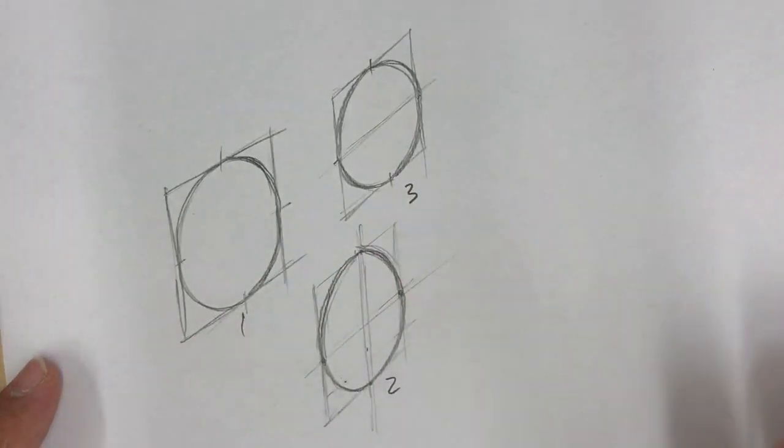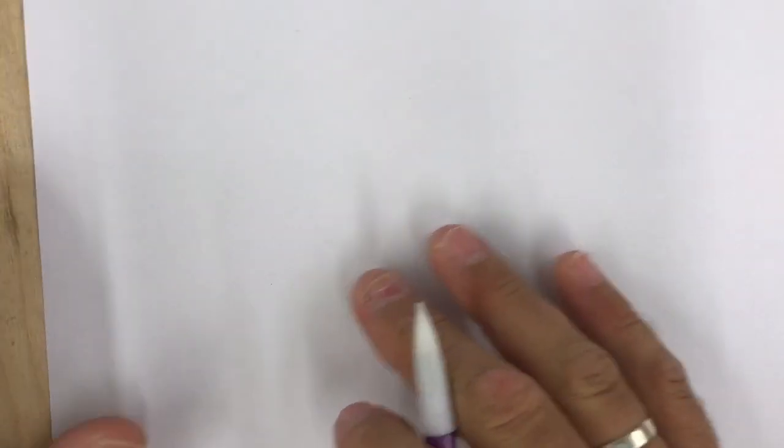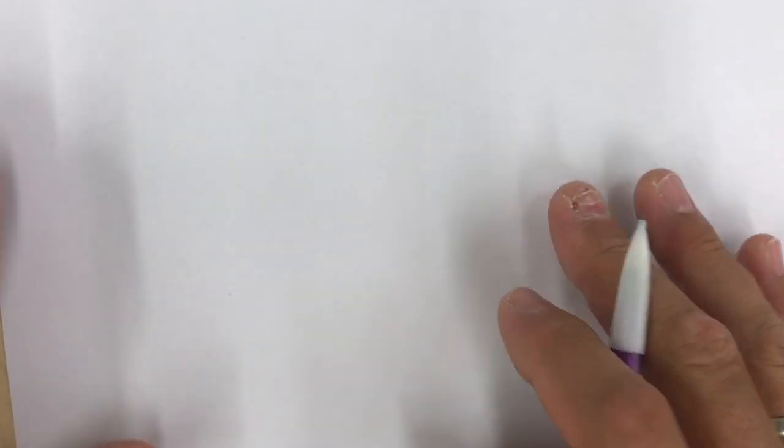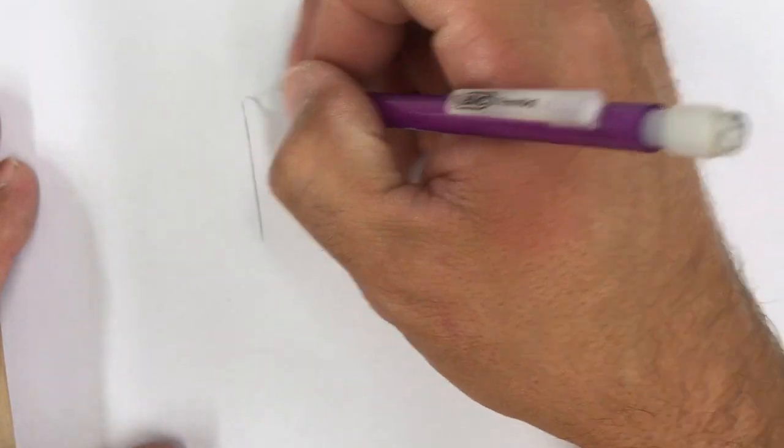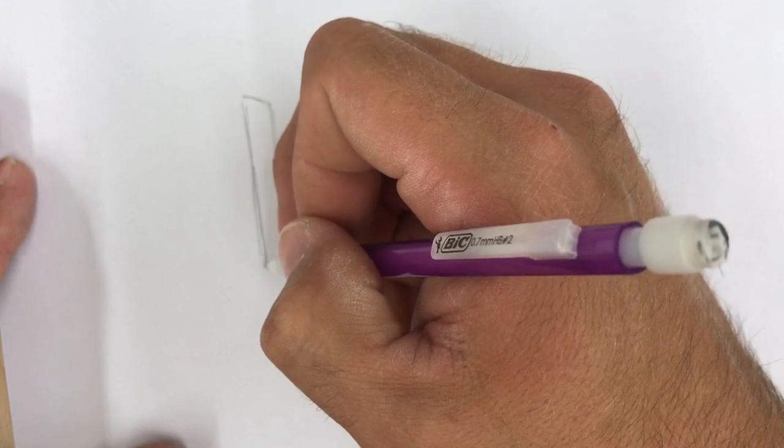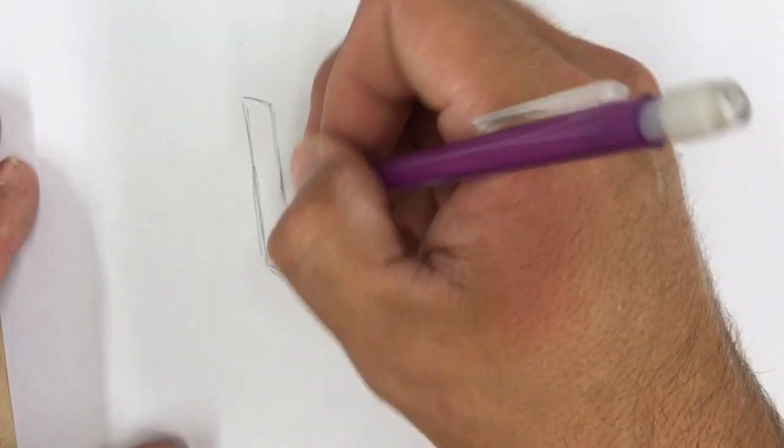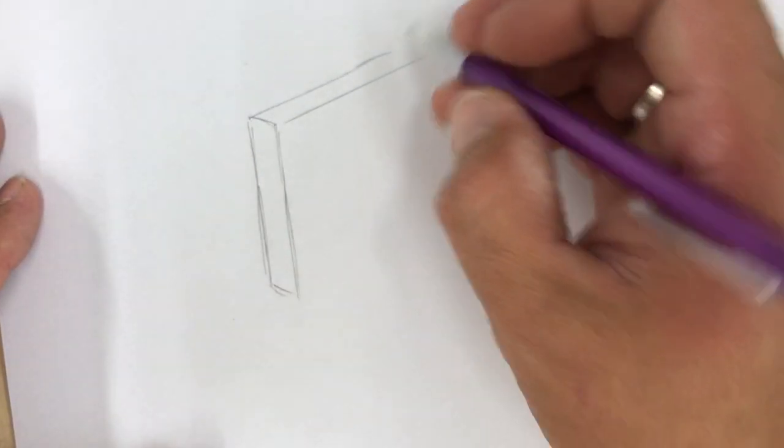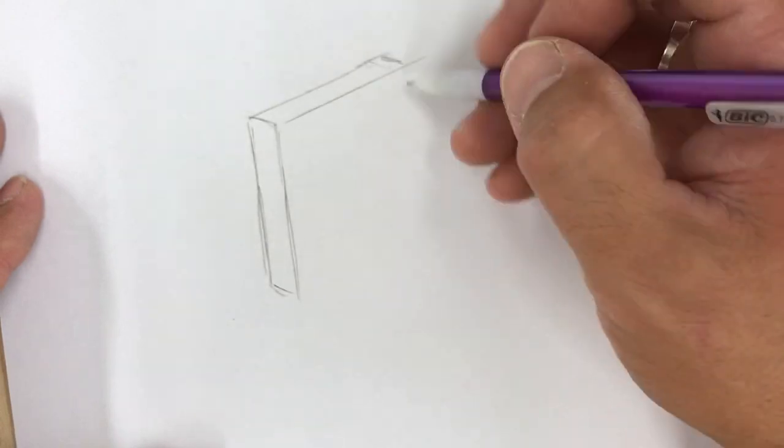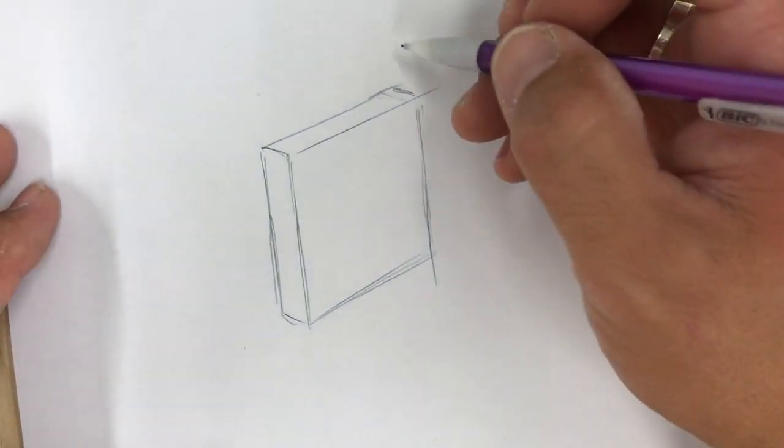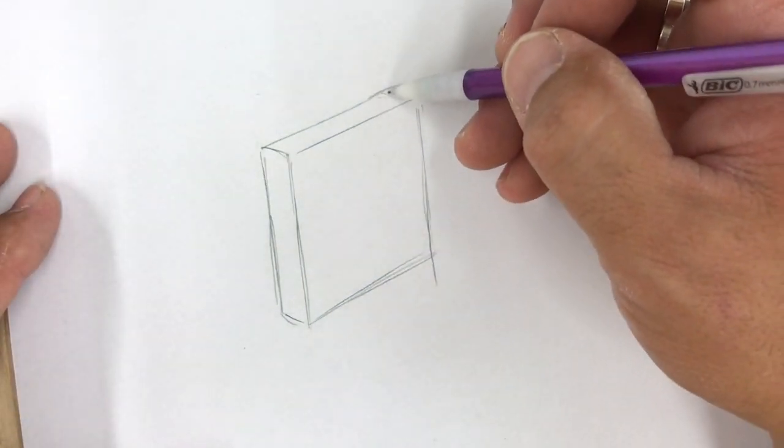All right, now we're going to take both those techniques and put them into now a cube. So what we have is we're going to draw our cube, and I'm going to start from the side and really determine the thickness of our cube, and then I'll go out. We want to try and have it as square as possible.